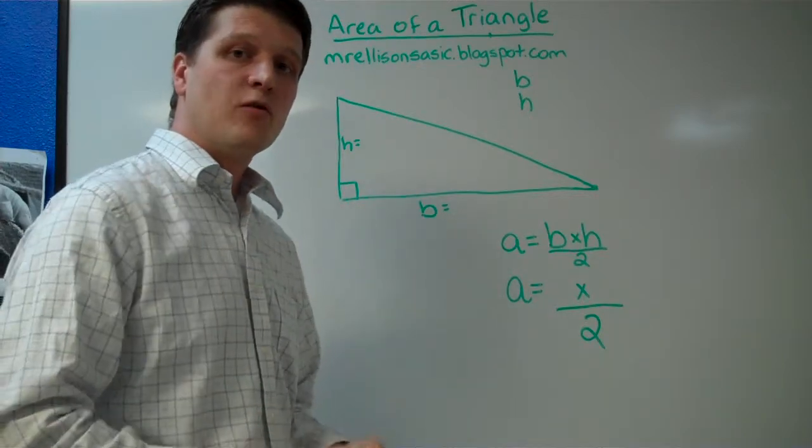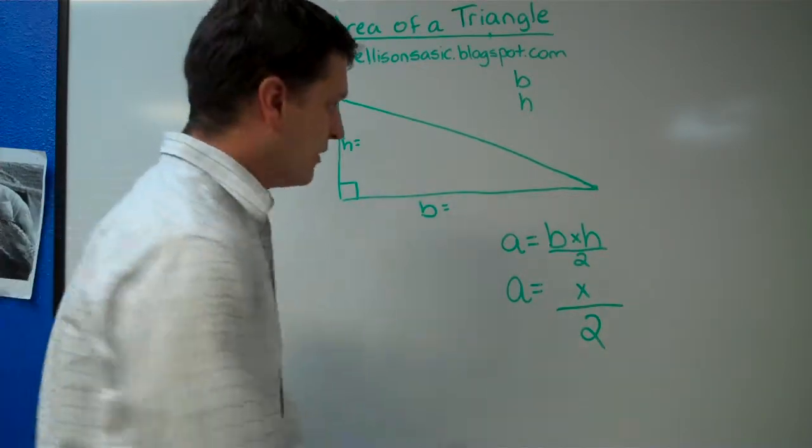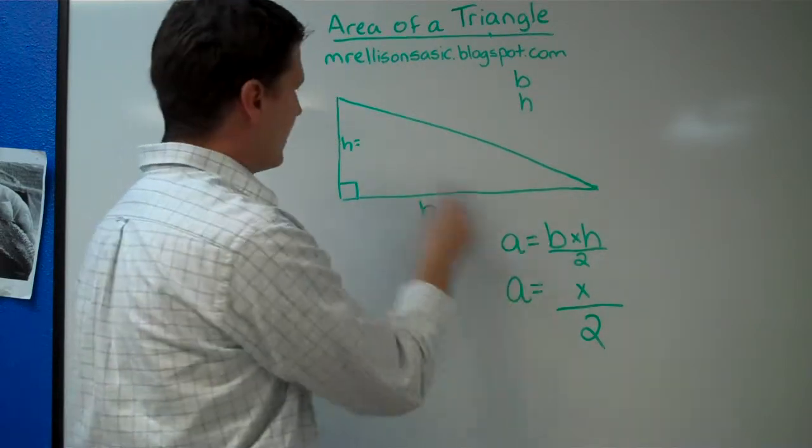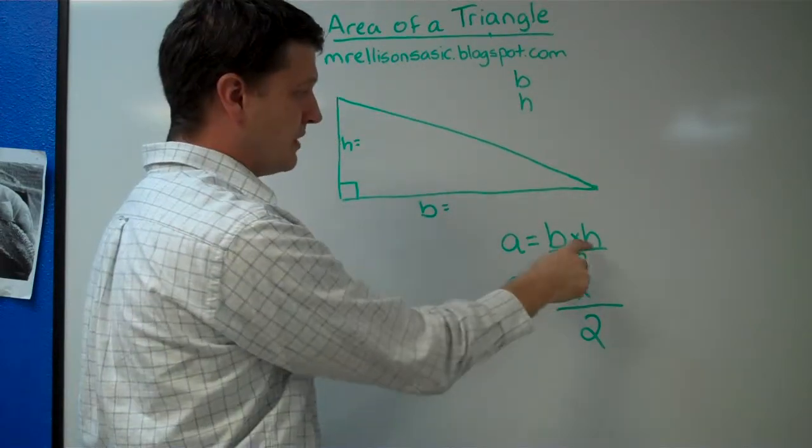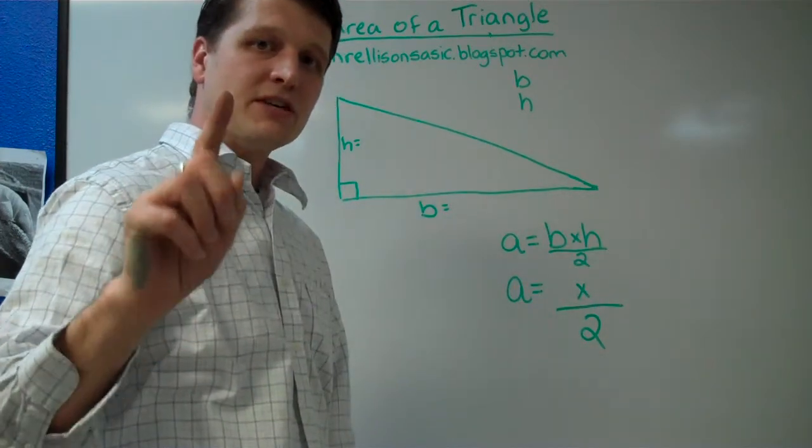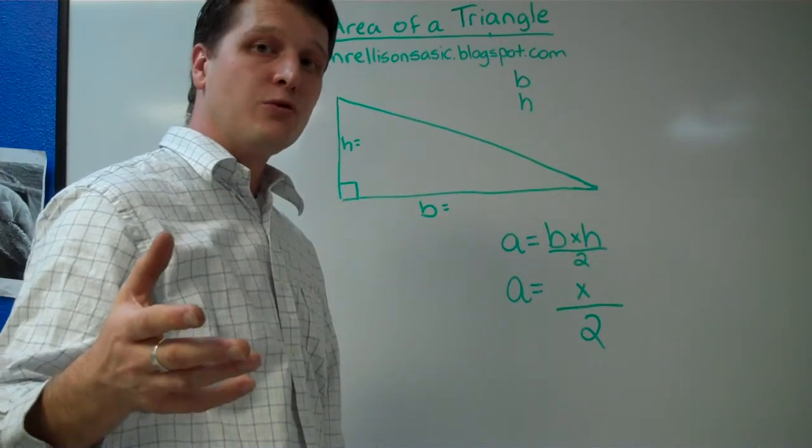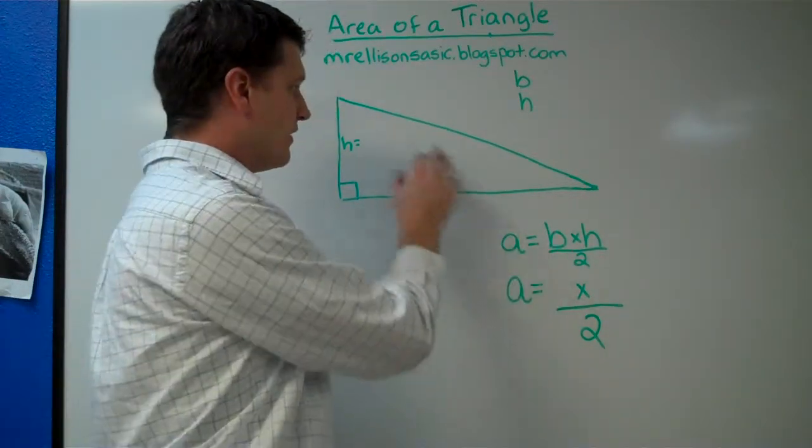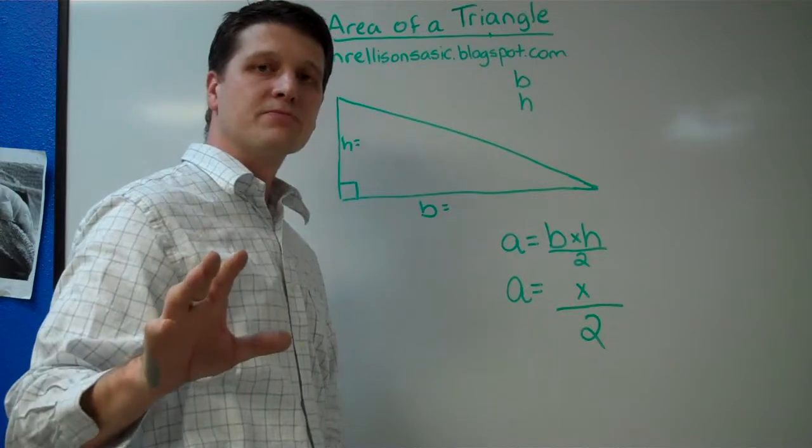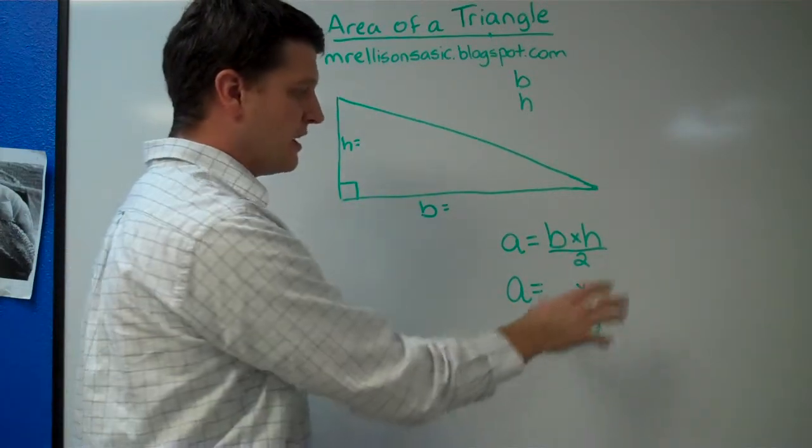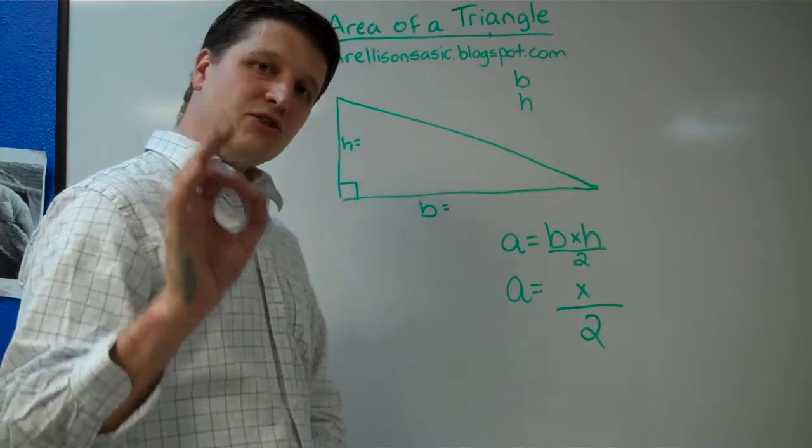Now, the formula for solving for the area of a triangle is the area equals the base, which is this number, times the height, which is this measurement, and we're going to divide it by two. Now, in just a minute, I'm going to explain to you guys why we divide by two. But first, we're going to solve for the area of this triangle. I'm going to plug in some numbers, and then we're going to plug those numbers into this formula and see what we get as a unit of measurement.